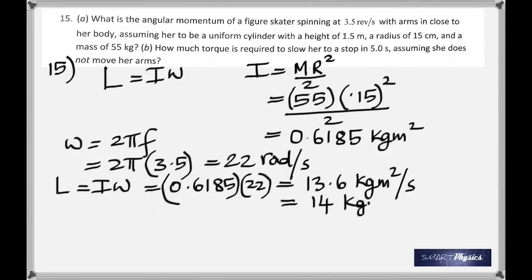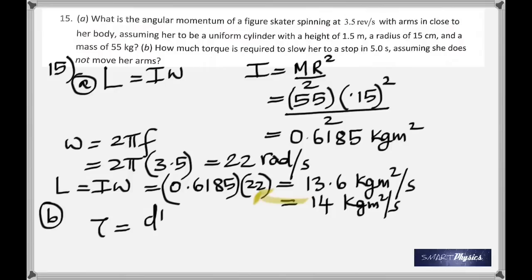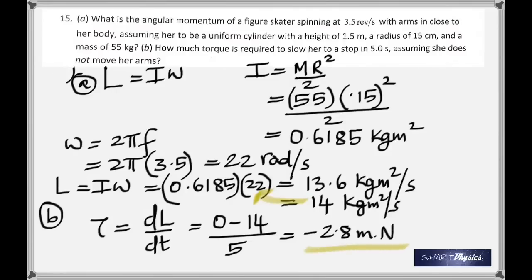For part b, how much torque is required to slow her to a stop in 5 seconds? Using torque = ΔL/Δt: the final angular momentum is 0, so torque = (0 − 14)/5 = −2.8 N·m (negative because it opposes rotation).